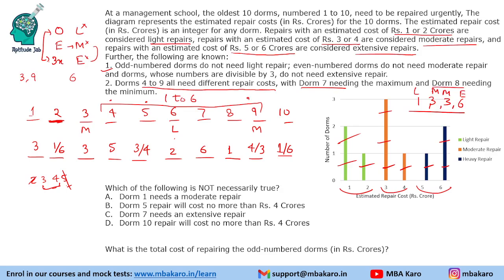The first question asks which of the following is not necessarily true. DOM 1 needs moderate repair — true. DOM 5 repair costs no more than 4 crores — DOM 5's maximum is 4, so true. DOM 7 needs extensive repair — yes, true. The last statement, DOM 10's repair costs no more than 6 crores — it can be 6 crores, so this is not definitely true. That is the answer.